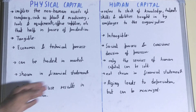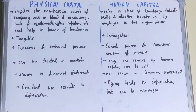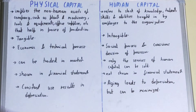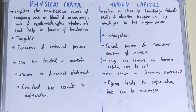Next, regarding the nature of depreciation, physical capital can be depreciated by constant use, but for human capital, aging leads to depreciation — though it can be minimized. This was all about the difference between physical capital and human capital. If you like the video, do hit the like button, don't miss subscribing, and thanks for watching.